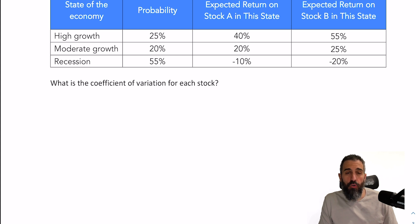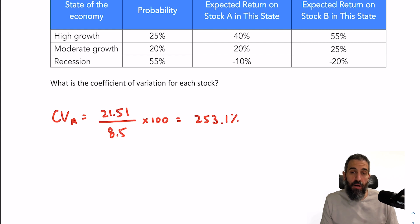In question number three, you're asked to find the coefficient of variation. Now to find the coefficient of variation for stock A, I'm going to take the standard deviation of 21.51 and divide it by the expected return of 8.5, multiply that by 100, and that gives me 253.1%. That is the amount of variation relative to my expected return, my risk relative to my return.